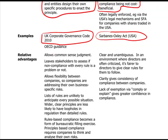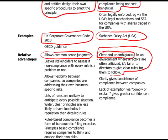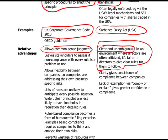A principles-based approach allows common sense judgment, whereas a rules-based approach is clear and unambiguous — the rule is the rule. It's also an environment where directors are often criticized, so giving clear rules for them to follow means directors perhaps feel better off in a rules-based approach. They know the guidelines, there is clarity and consistency between companies, and the lack of 'comply or explain' exemptions gives greater confidence in compliance.